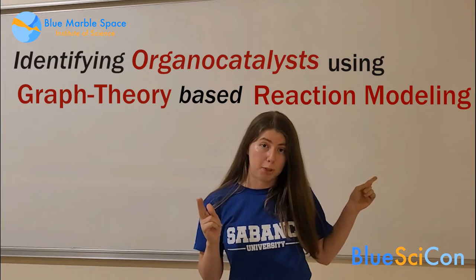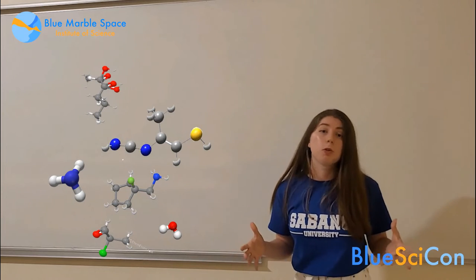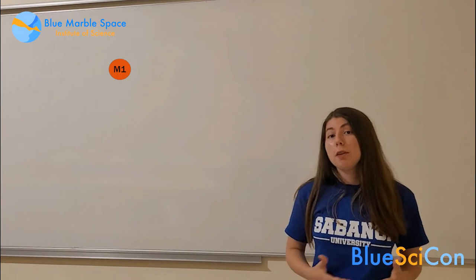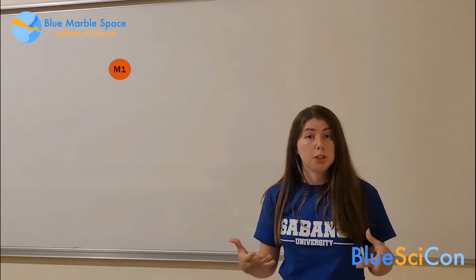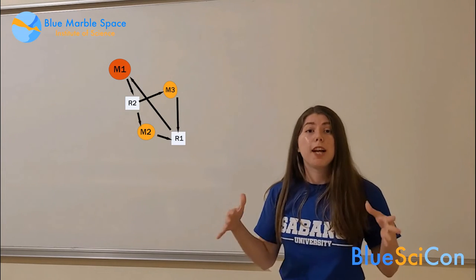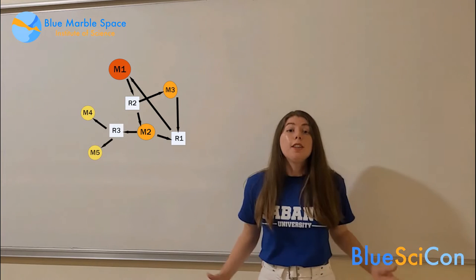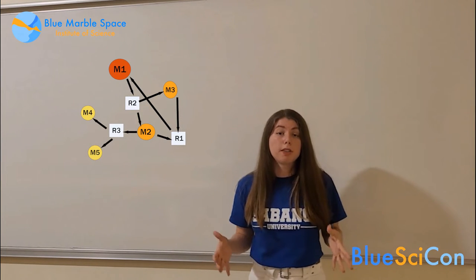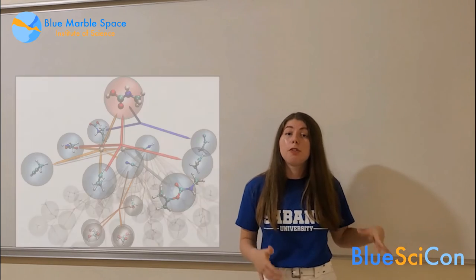I'm working on the project Identifying Organocatalysts Using Graph Theory-Based Reaction Modeling. Think that we have a group of molecules which naturally react with each other — let's call them our first generation of molecules. When we put them into the same environment, they will react and their products will make up our second generation of molecules. Then they all will react again and the third generation will be produced. By using computational methods, we are able to model chemical reaction networks where we can observe the relations between generations of these molecules. From these networks, plenty of information can be gathered — such as the organocatalysts, the autocatalytic cycles, and the relations between the molecules in these reactions.